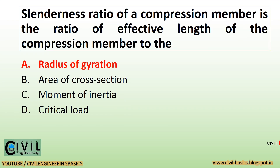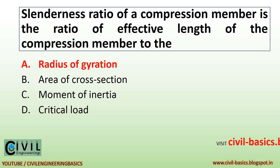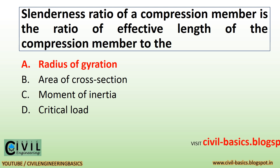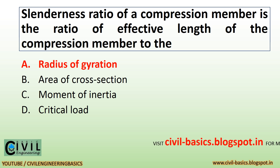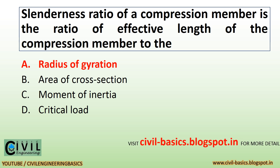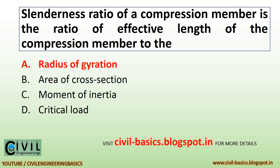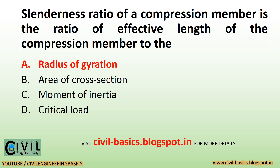Slenderness ratio of a compression member is the ratio of effective length of the compression member to the radius of gyration.